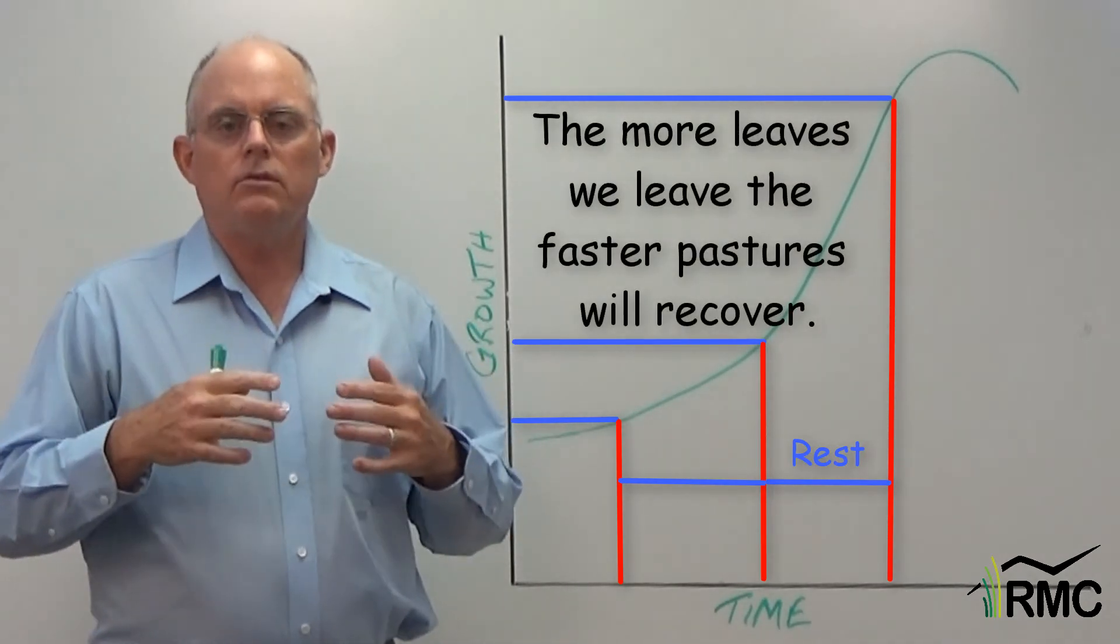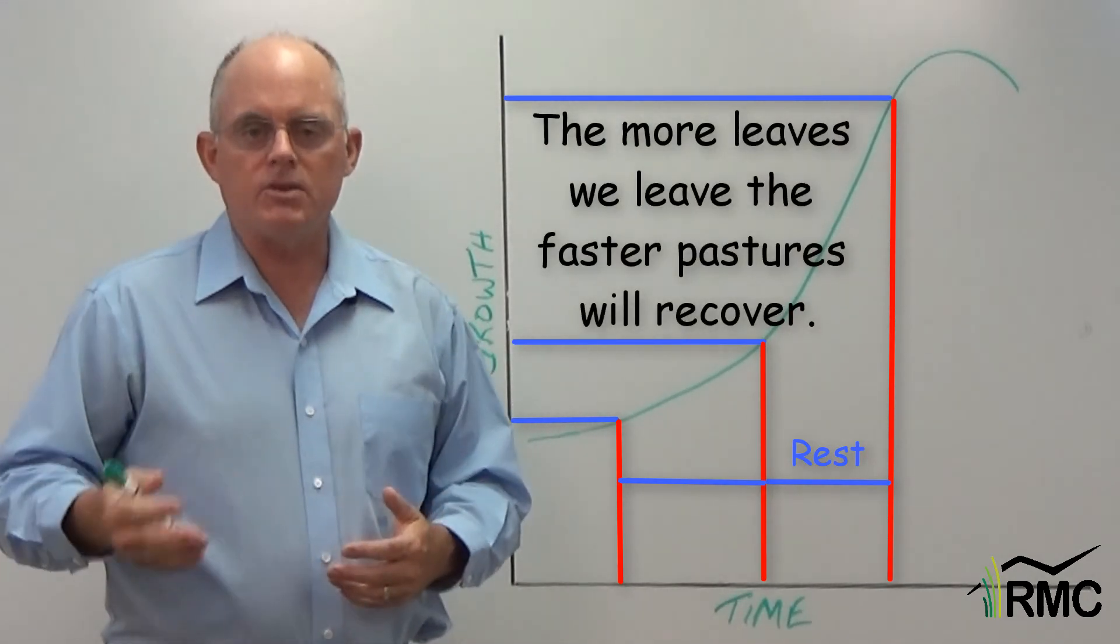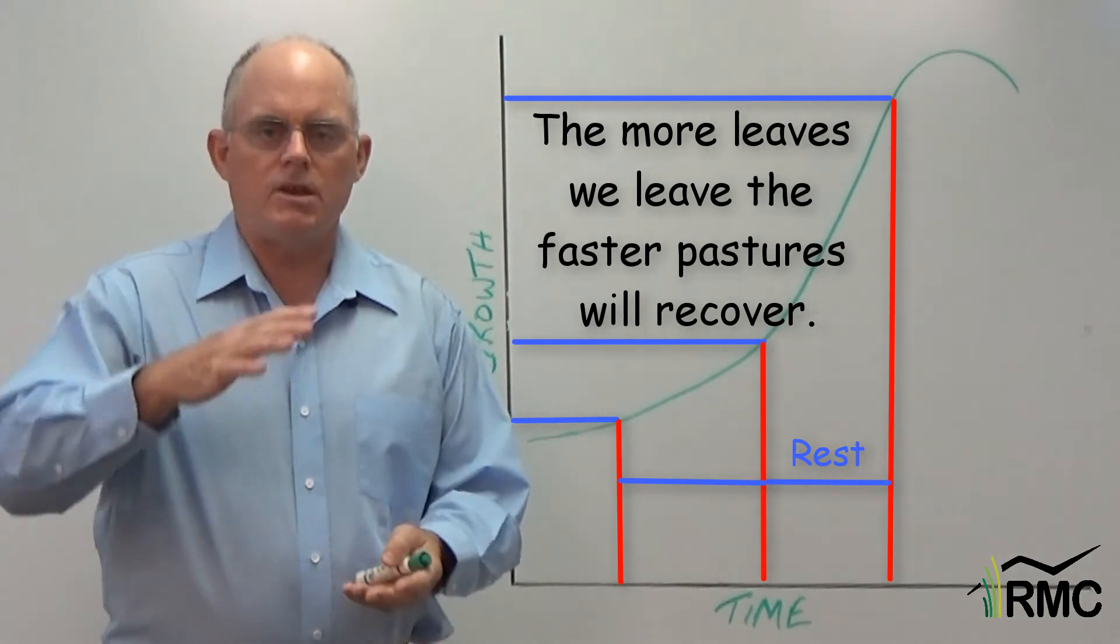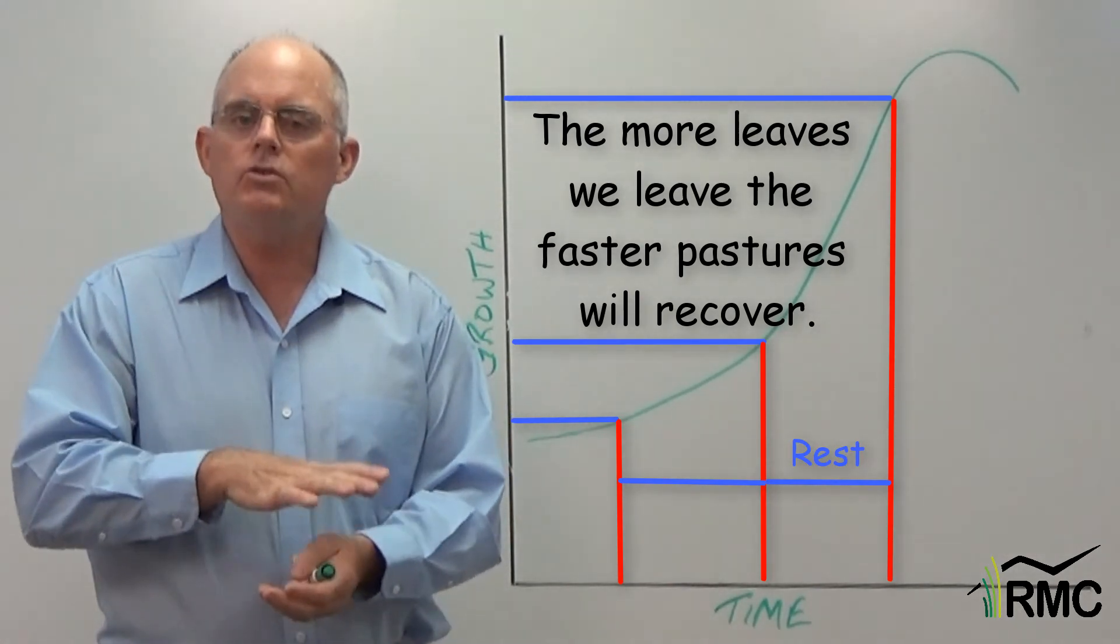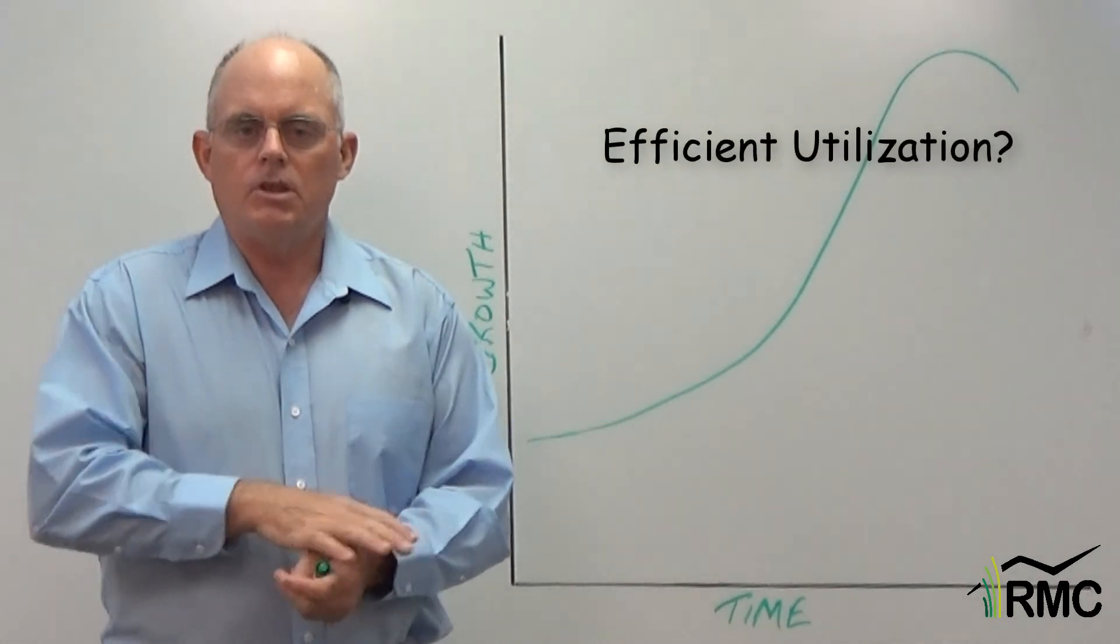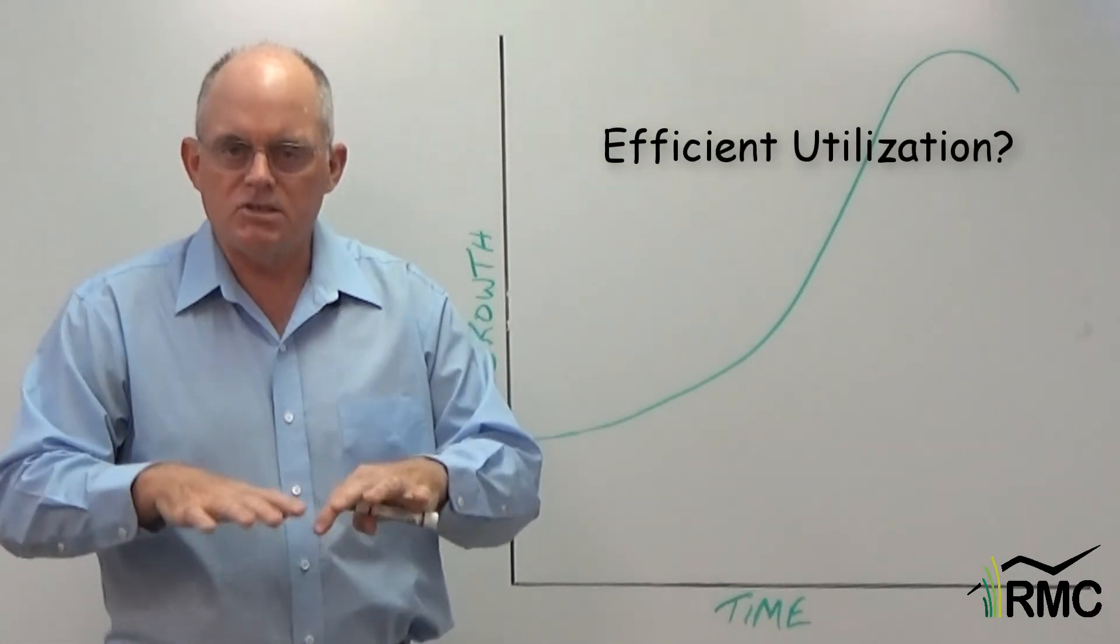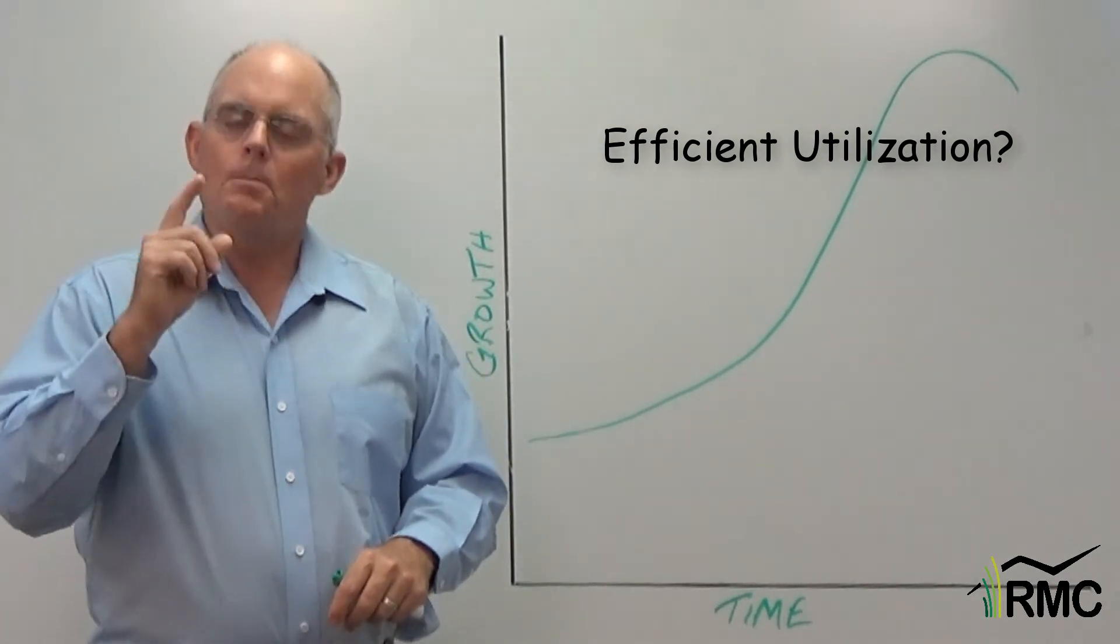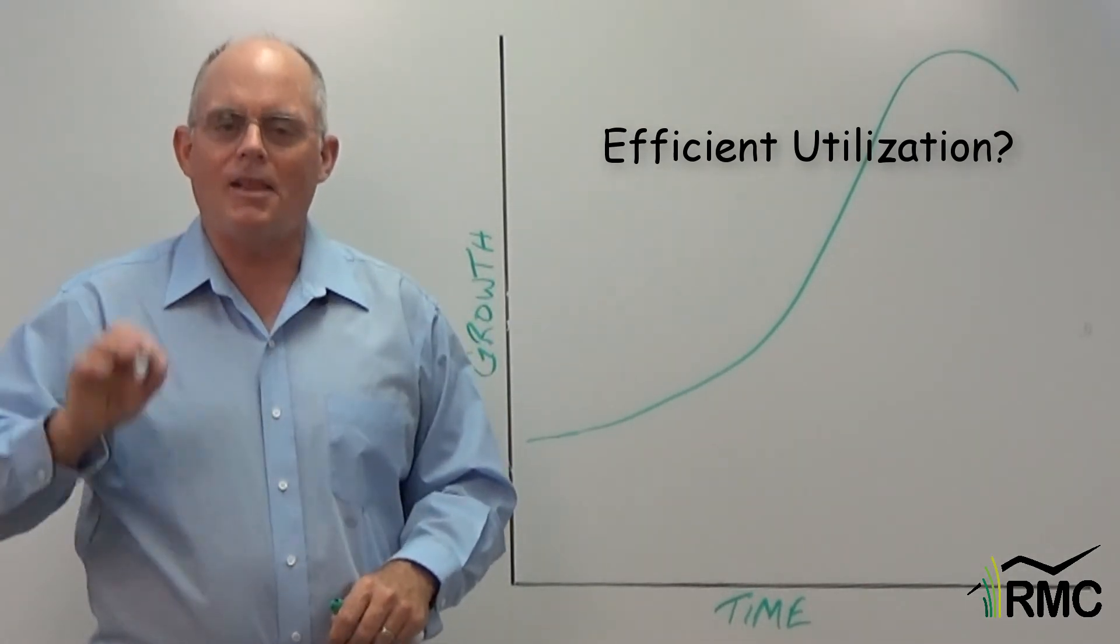In general the more leaves we leave the faster our pastures will recover. Now I think one reason that a lot of ranchers graze pastures too severely is that they're focused on utilization. When they see that all the grass has been grazed down they think it's been used efficiently. But they're putting the emphasis on the wrong syllable.